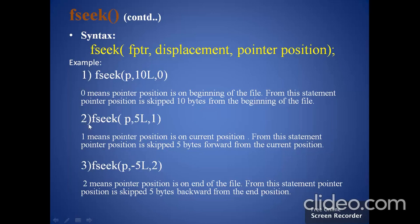Consider example 2: fseek(p, 5l, 1); Here, p is the name of the file pointer. The pointer position is 1, meaning the pointer is at the current position. The significance of 5l is that the pointer position is skipped 5 bytes forward from the current position. This forward action happens because the sign of the displacement is positive.